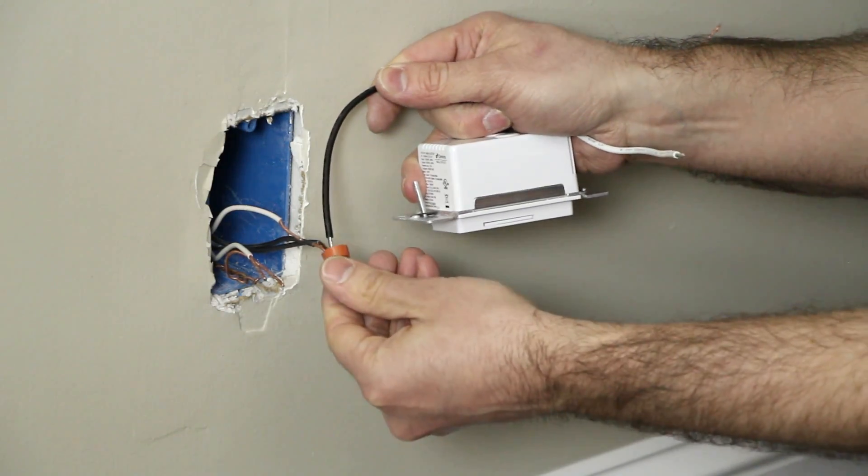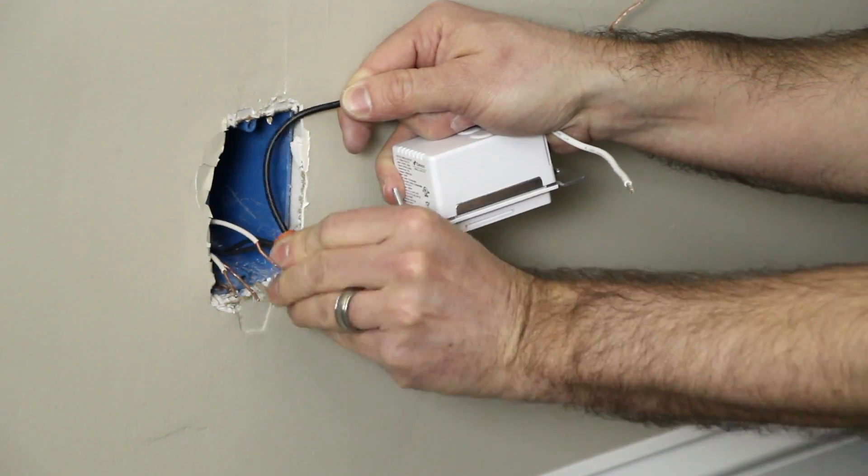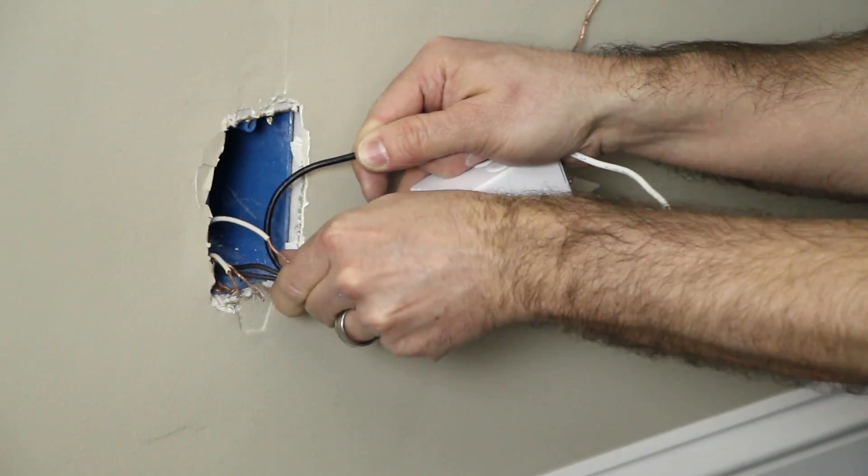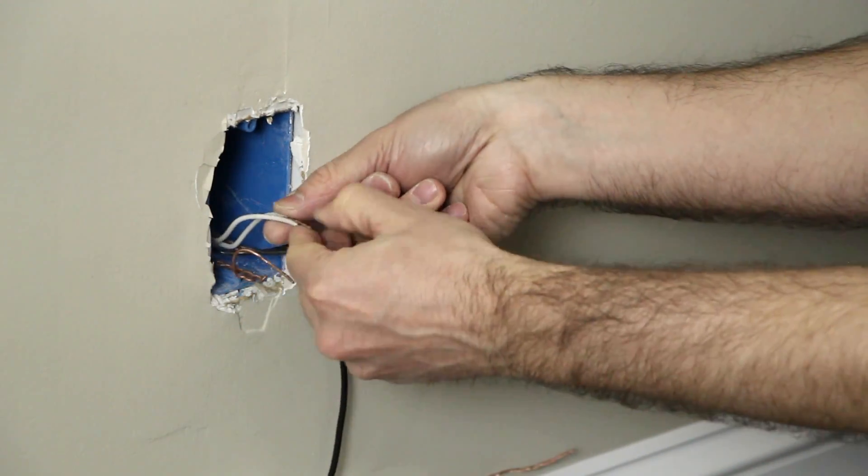When installing the iDevices Wall Outlet, connect the black wire on the back of the wall outlet to the line wires, which are typically black, with the provided wire nuts. If there are multiple black wires, cap them all together.